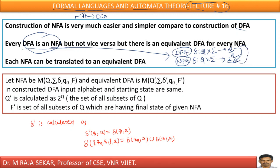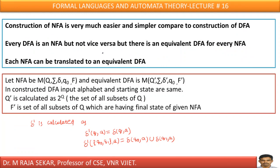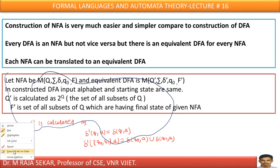But the converse need not be true — NFA need not be a DFA. However, you can always construct an equivalent DFA for a given NFA. In this class, we will try to understand the procedure of conversion from NFA to DFA. Before discussing that procedure, let me solve problems. If I solve a problem, you can understand this particular procedure. First, let me explain a few problems.